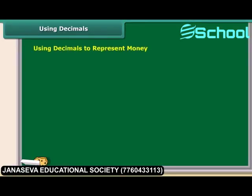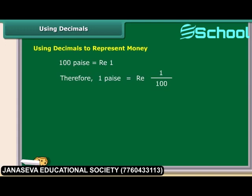Money can be represented using decimal notation. It is common knowledge that 100 paise are equal to one rupee, which means one paisa is equal to one-hundredth of a rupee. We know that one-hundredth can be written as 0.01 in decimal notation.